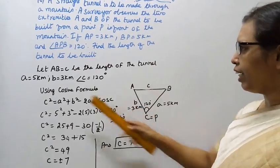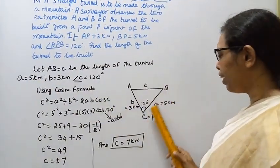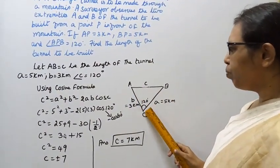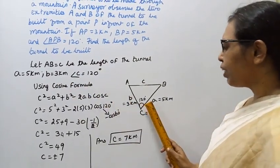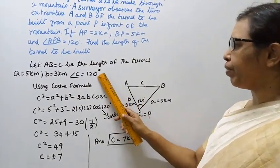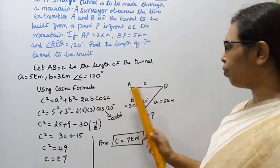A equal to 5 km, B equal to 3 km, angle C equal to 120 degrees. Using cosine formula.